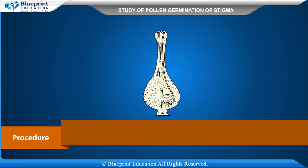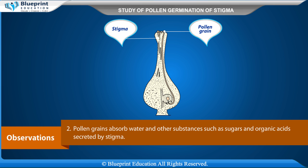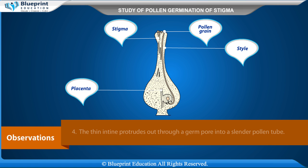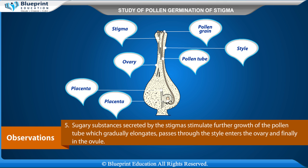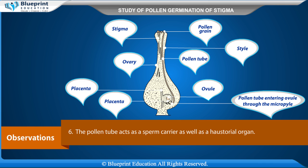Place the slide under the microscope. Observations: Many pollen grains are present over the stigma. Pollen grains absorb water and other substances such as sugars and organic acids secreted by the stigma. Observe many pollen grains germinating over the stigma. The intine protrudes out through a germ pore into a slender pollen tube. Sugary substances secreted by the stigma stimulate further growth of the pollen tube, which gradually elongates, passes through the style, enters the ovary, and finally reaches the ovule. The pollen tube acts as a sperm carrier as well as a haustorial organ.